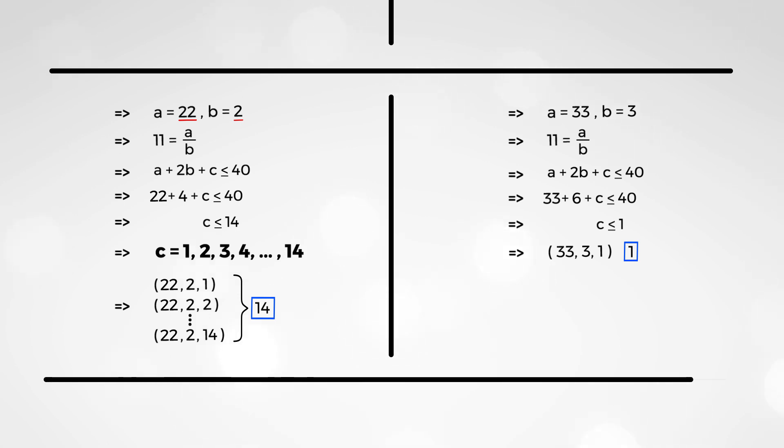Can we keep going? And let's see. What if you have a equals to 44 and b equal to 4? Well, what happens here is, in this equation, c is no longer positive. It becomes negative. So, we can't use that because a, b, and c have to be positive integers.